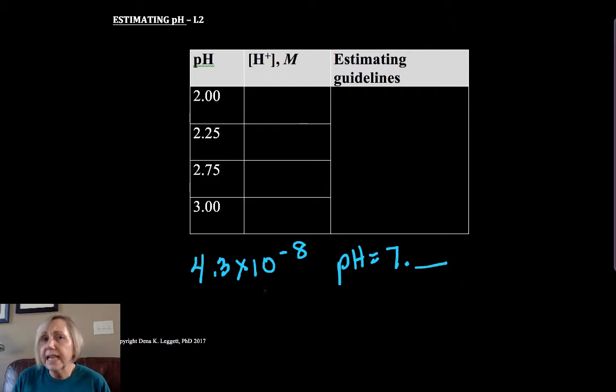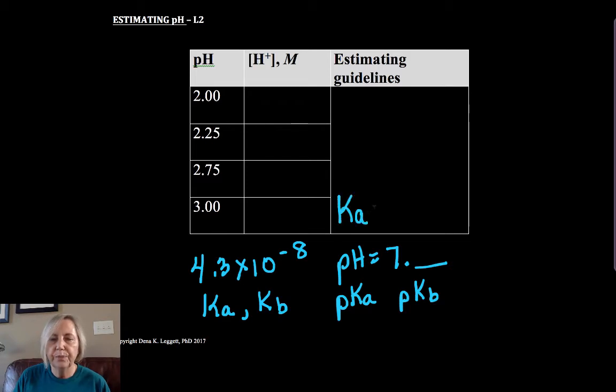This has applications as well when we are talking about Ka's and Kb's, right? Because it's quite common to report values as pKa - minus the log of the Ka - or pKb - minus the log of the Kb. So if my Ka value is 1.8 times 10 to the minus 5...